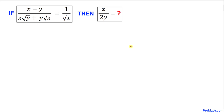Welcome to pre-math. In this video tutorial we have got an if-and-then statement with this question: if (x minus y) divided by (x times square root of y plus y times square root of x) equals 1 over square root of x, then we are going to find the value of x divided by 2y.